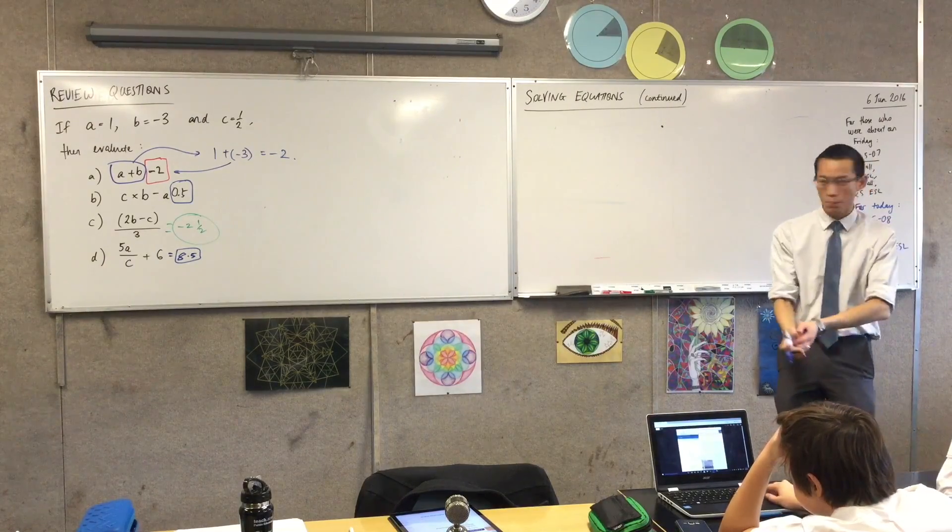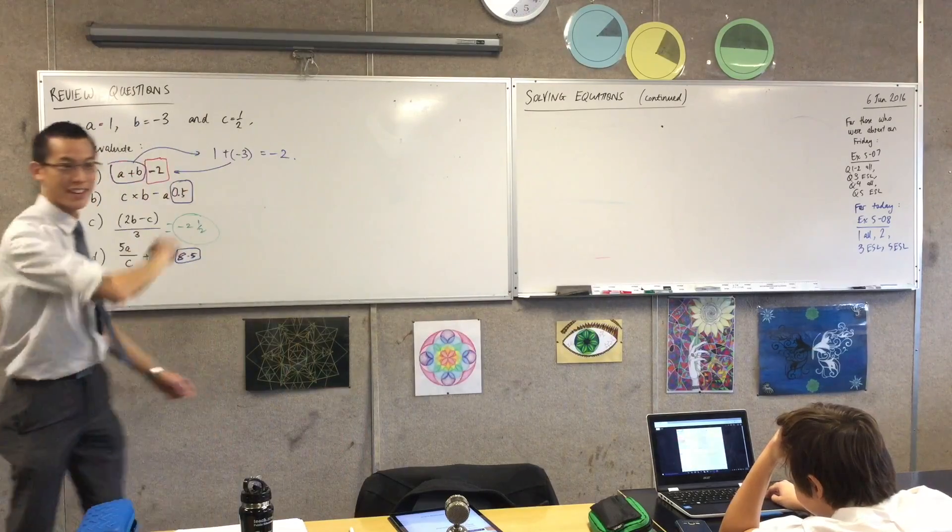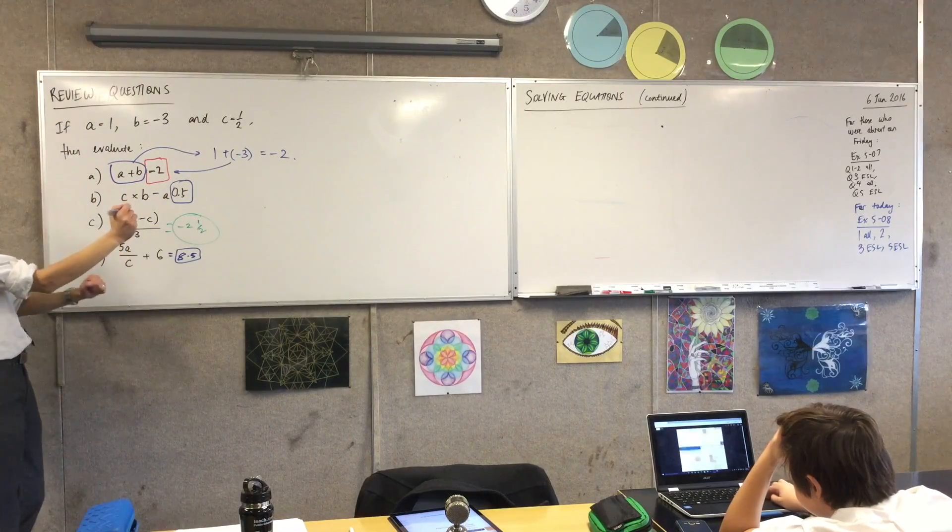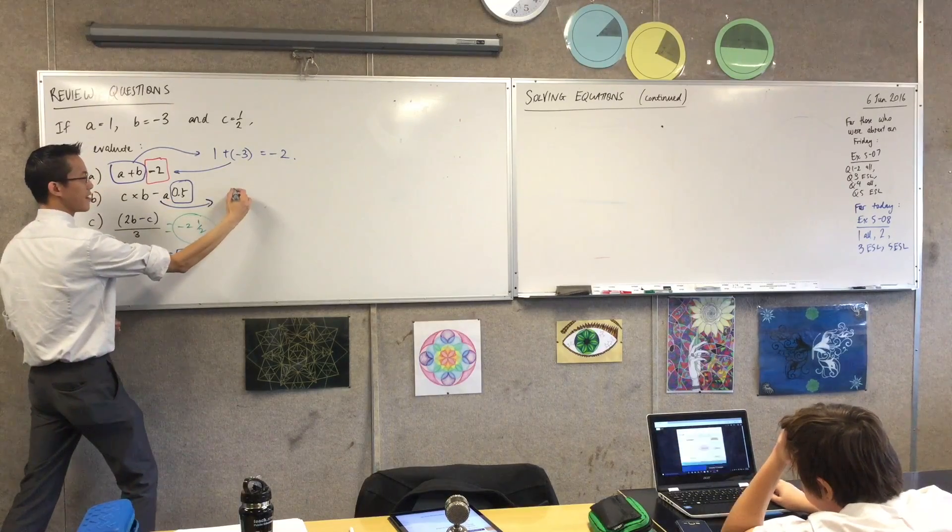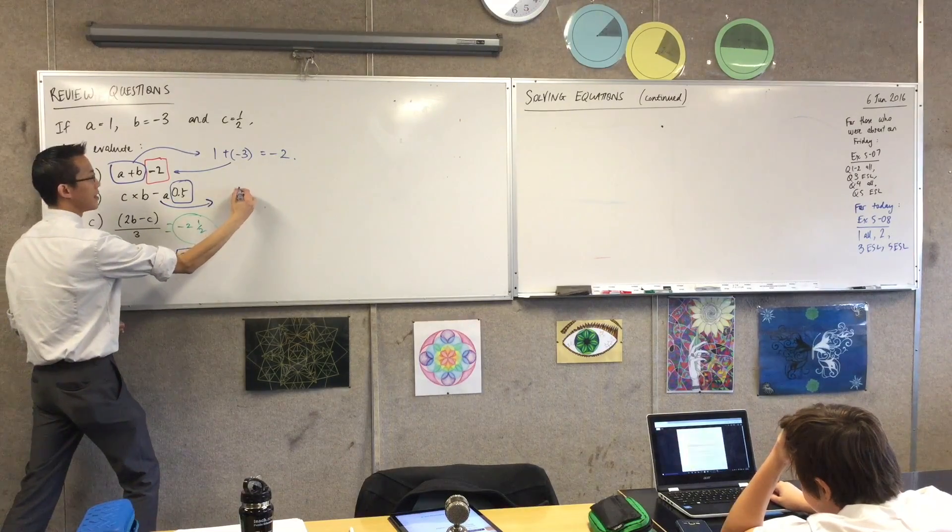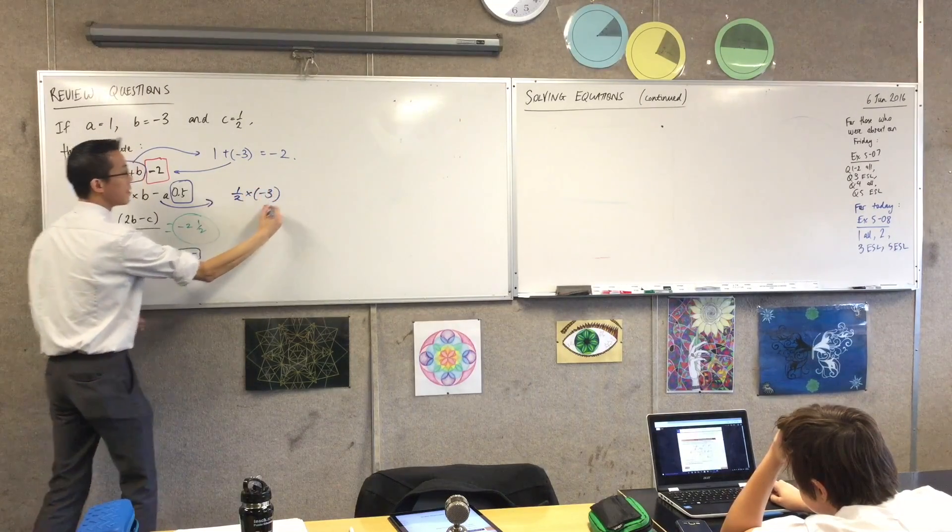Again, what line are we working? We're going to put in for part B. What are you going to do before you get to this answer? Yes, Tradesh. Okay, can you tell me what to write? C equals a half. Yep. And B equals negative 3. Yep. And then A is 1.